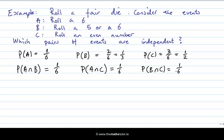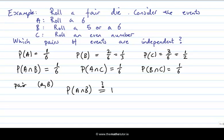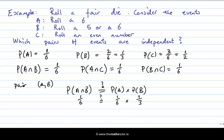Now we have all the numerical information to check independence. Are events A and B independent? We ask: is P(A ∩ B) equal to P(A) times P(B)? The probability of A and B is 1/6. P(A) is 1/6 and P(B) is 1/3. Is 1/6 equal to 1/6 times 1/3? No, it's false. So A and B are not independent. And that makes sense — clearly rolling a 6 should not be independent of rolling a 5 or a 6.